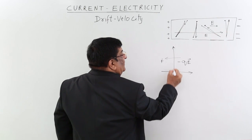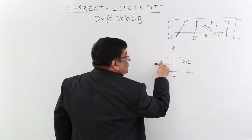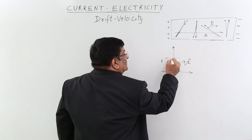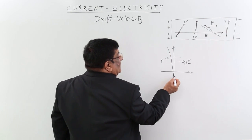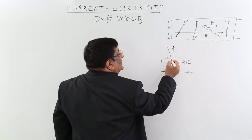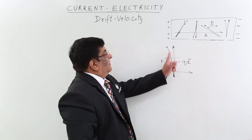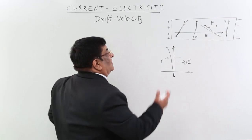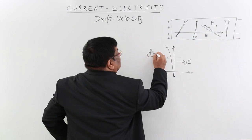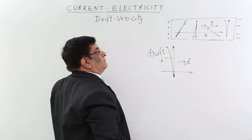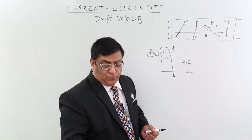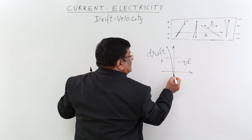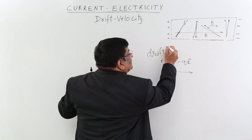This electron which is going from this place to this place experiences a force in this direction. Because of this force, it is pulled, and in place of landing here earlier, now it lands up here. So from its path, it has drifted. It should have gone to this place but it has actually gone to this place. So this is drift.